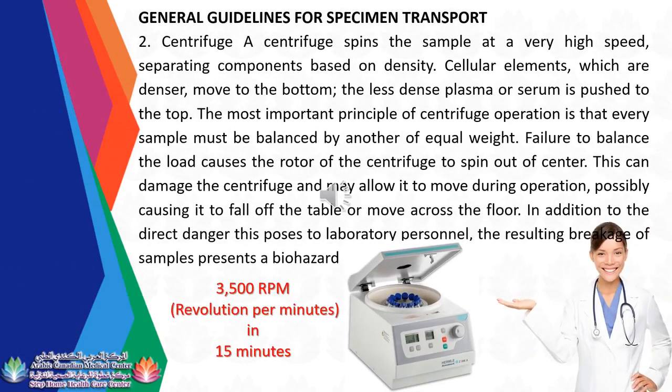Centrifuge: The centrifuge spins the sample at a very high speed, separating components based on density — cellular elements, which are denser, move to the bottom, while the less dense plasma or serum is pushed to the top. The most important principle of centrifuge operation is that every sample must be balanced by another of equal weight. Failure to balance the load causes the rotor to spin off-center, which can damage the centrifuge, possibly causing it to fall off the table, and the resulting breakage of samples presents a biohazard.